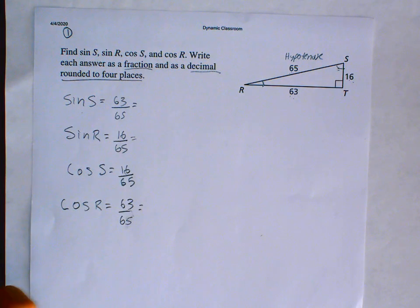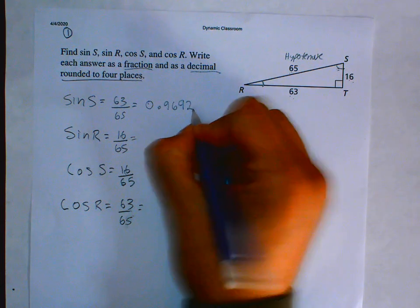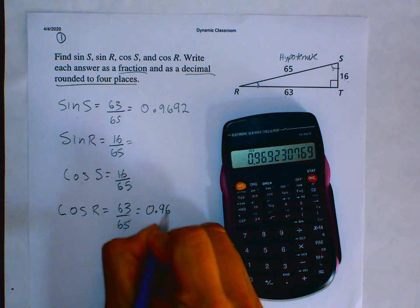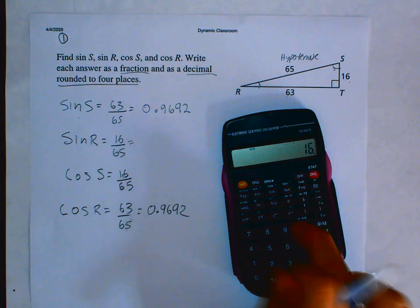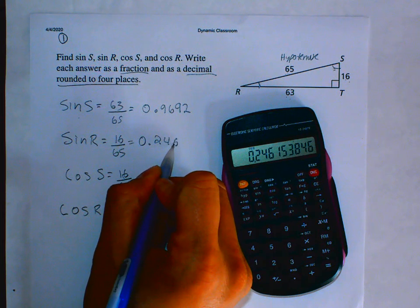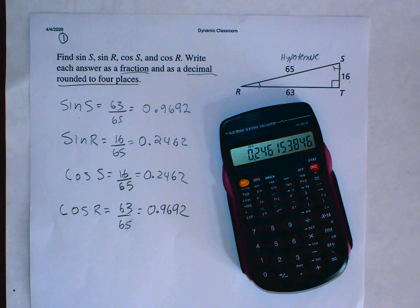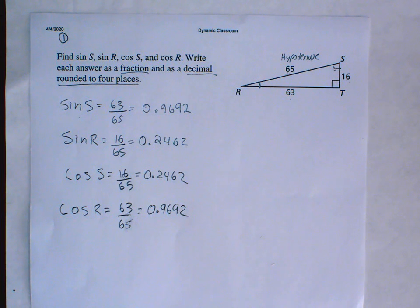Going to the calculator: 63 divided by 65 gives 0.9692 to four decimal places. Notice that the cosine of S equals the sine of R, so no need to type it again. For the sine of R: 16 over 65 gives 0.2462 — that 5 bumps the digit up. The cosine of R is the same value as the sine of S. If Big Ideas wants the actual fraction, use those; if they want the decimal to the nearest four decimal places, use these. Pause the video if you need to take notes.